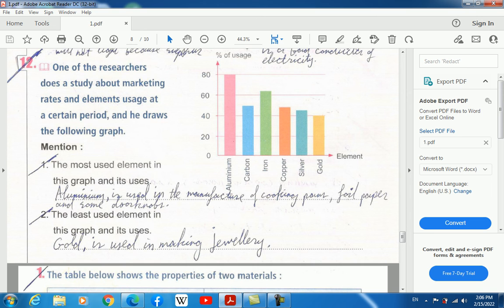Number two, the least used element in the graph and its uses. The least one which is used is gold. What is the most important function of gold? It's used in making jewelry, necklaces, rings, and that stuff.